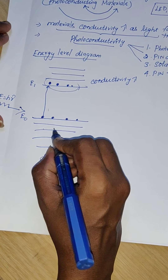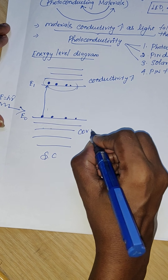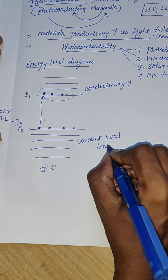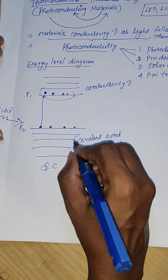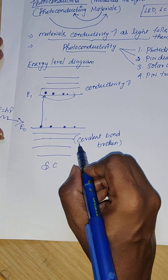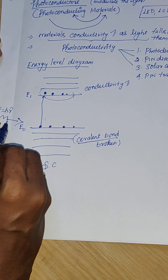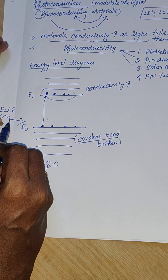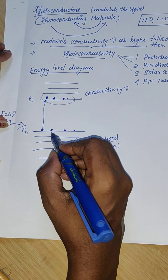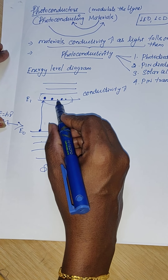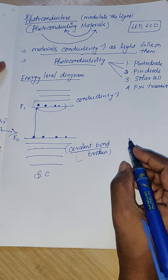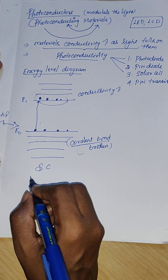As we supply photons with maximum energy, slowly the covalent bonds get broken. All atoms in the semiconductor are tightly joined by covalent bonds. When the photon energy increases, covalent bonds break and more and more electrons move to the excited state, hence the conductivity of the semiconducting material increases.